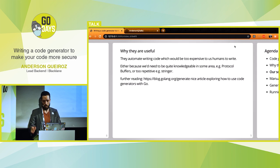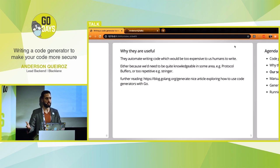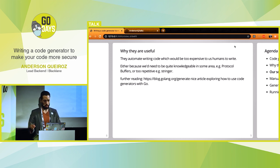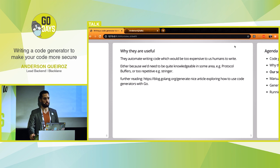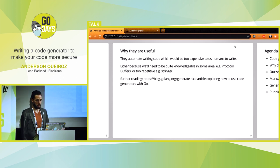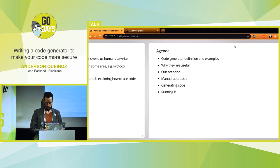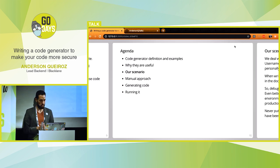Why are they useful? Basically they automate stuff. We can divide this into categories: one is code that's just too repetitive to keep writing and maintaining all the time — like stringer, one of Go's tools. Another, like protocol buffers, is not just a lot of code to be written, but also requires a lot of specific knowledge, so it's not easy for everyone to write. That's what these tools help us with.